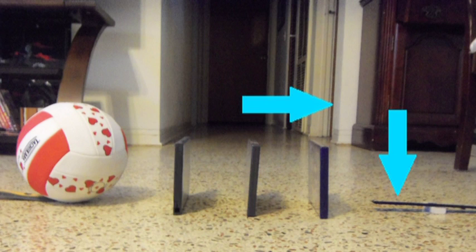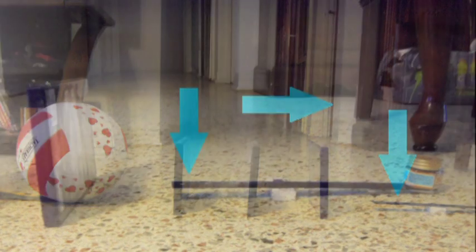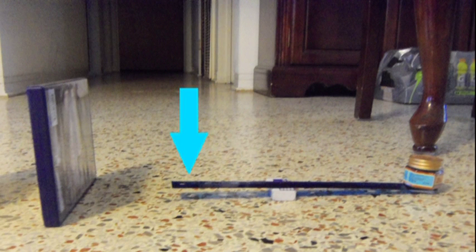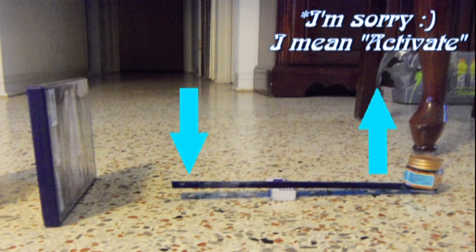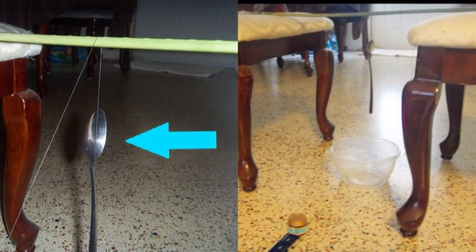The last block will hit another lever and this lever is connected with the pulley. Once it hits the lever, the lever will activate the pulley. And at the end of the pulley is connected with the spoon.